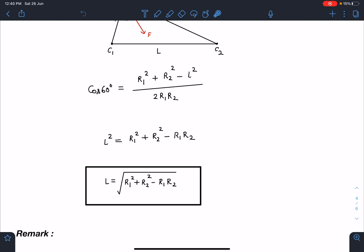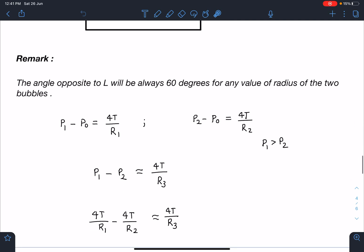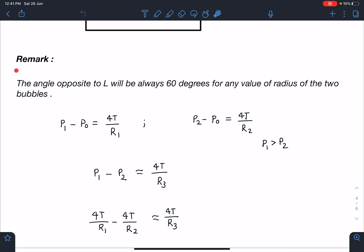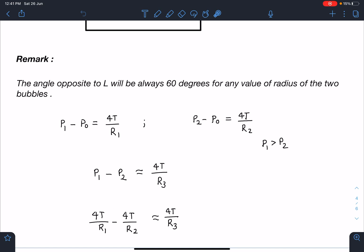I'll suggest you guys to remember this result because the question in advanced paper can come with different different values, and by chance if they are asking distance between the centers directly you can substitute the values and you can take the lead instead of solving in the exam hall. So I have given a remark here because I was puzzled when I saw this question and it was making angle of 60 degrees for any value of R1, R2.